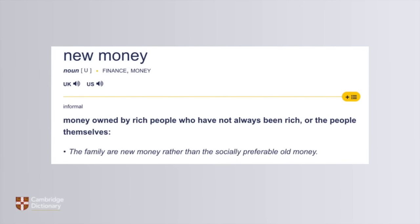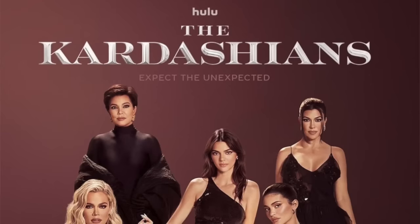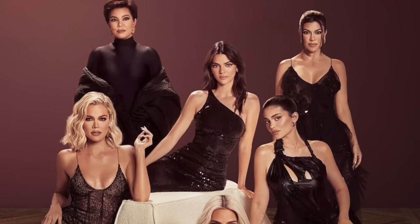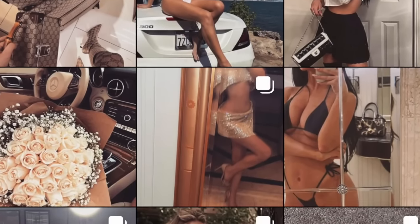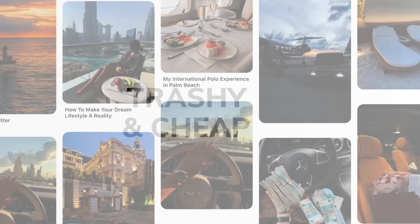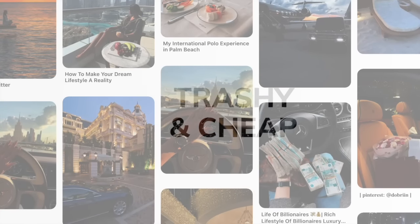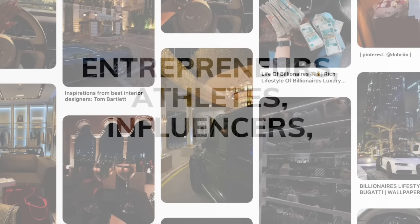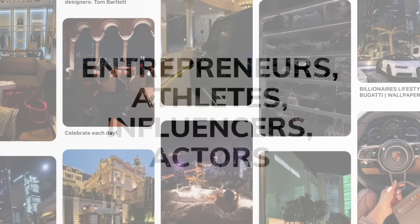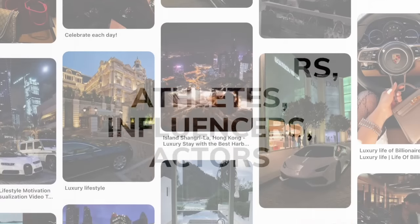New money, on the other hand, refers to individuals or families who have acquired wealth recently. It could be the Kardashians or any influencer showing luxury bags and other items with many logos on them — that's usually what people associate with the new money aesthetic, which is perceived as more trashy and cheap. New money could refer to entrepreneurs, athletes, influencers, or actors — people who became rich later and are not from a rich family.